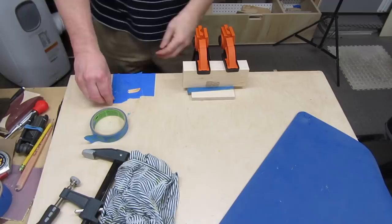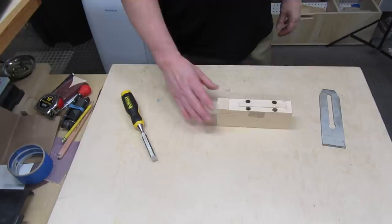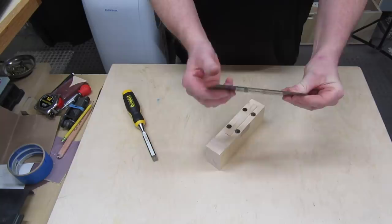Once the glue dried, I cleaned off the tops of the magnets using a chisel. Obviously, you want the beveled edge of the blade facing up. The magnets hold pretty well, although I might consider adding two more. We'll see.